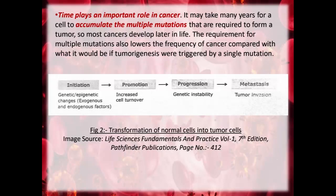The transition of a normal cell into a tumour cell is referred to as transformation. The transition from a normal to a transformed state is a multi-step process involving genetic as well as epigenetic changes, and selection of cells with progressively increasing capacity for proliferation, invasion and metastasis. Conceptually this process can be divided into three distinct stages: initiation, promotion, and progression.